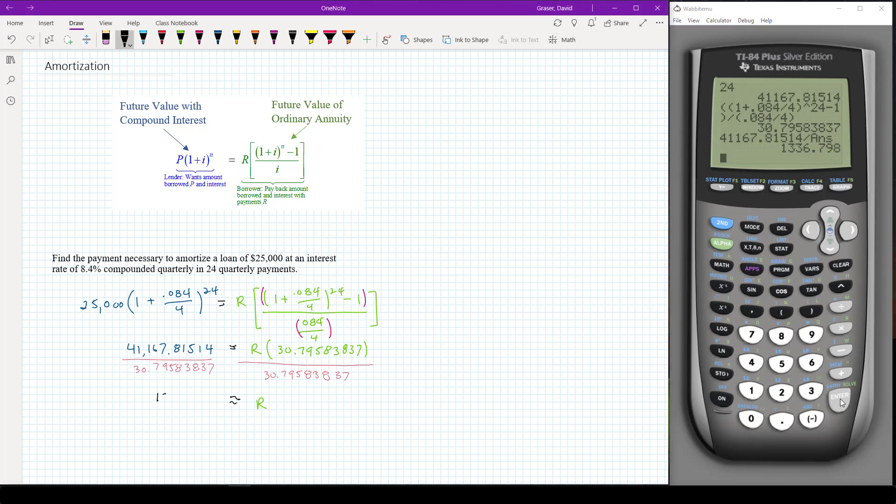Of 1336, so $1,336. I'm going to round this to the nearest penny, so $1,336.80. A lot of your homework systems will go ahead and always round to the nearest penny.